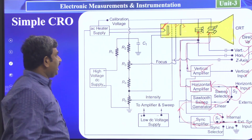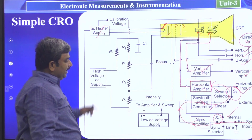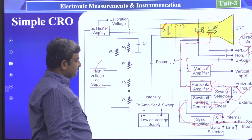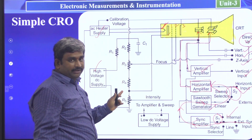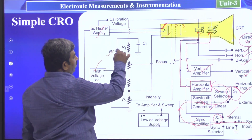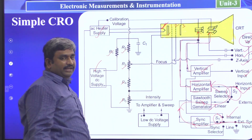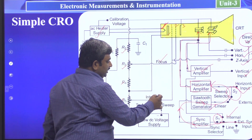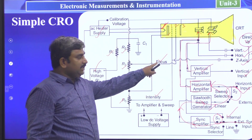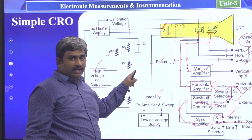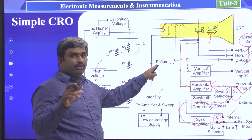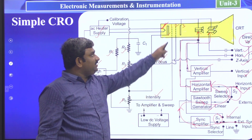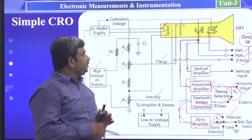On the left side of the block diagram, we have an AC supply connected to the CRT heater, and a high voltage DC supply connected to a resistor divider network with resistors R1, R2, R3, R4, and R5. Of these five resistors, two are used for controlling focus and intensity: R3 (a potentiometer/variable resistor) controls the focus of the CRT, and R5 controls the intensity.